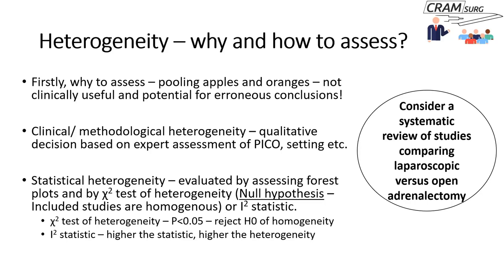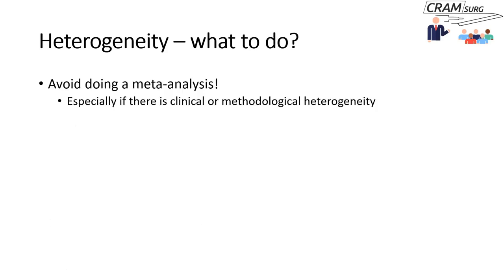The other thing to look at is the I-squared statistic. The higher the I-squared statistic, the higher the heterogeneity — so you want a very low I-squared. With the chi-square test for heterogeneity, you would want a p-value of more than 0.05, because a p-value of less than 0.05 means you reject the null hypothesis that the studies are homogeneous and must conclude that the studies are indeed heterogeneous.